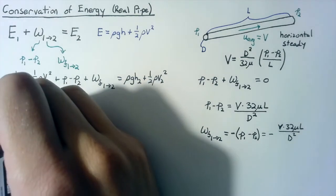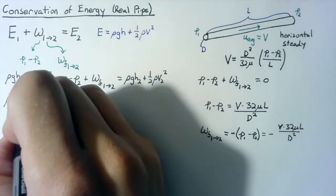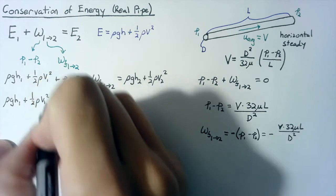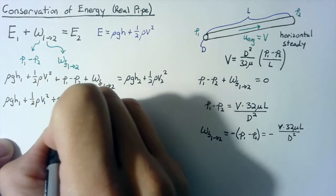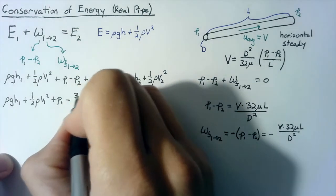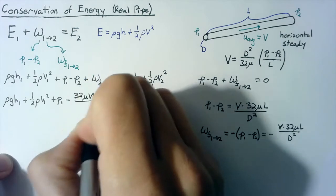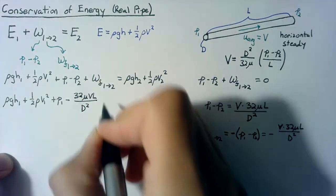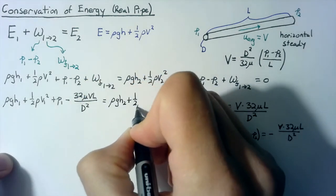So now we can plug this back into our equation up above. Rho GH1 plus one half rho V1 squared plus P1 minus this term here, which I'm going to clean up as 32 mu VL over D squared, is going to be equal to everything for state two.